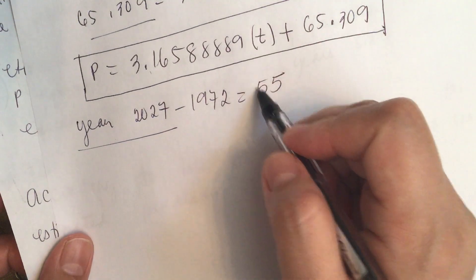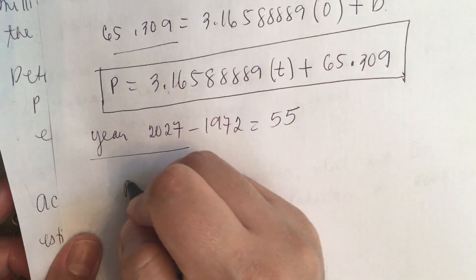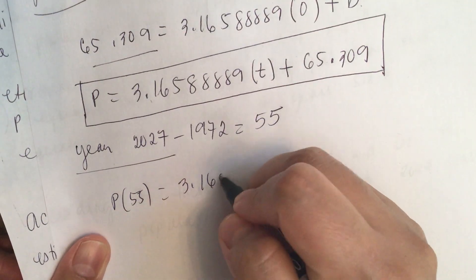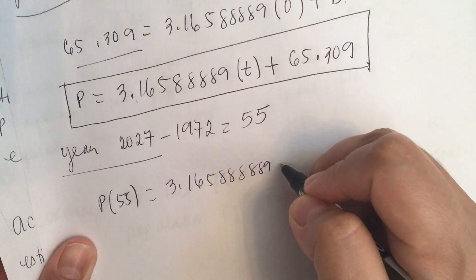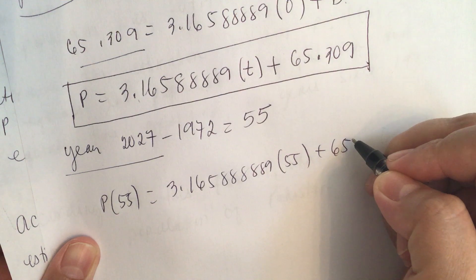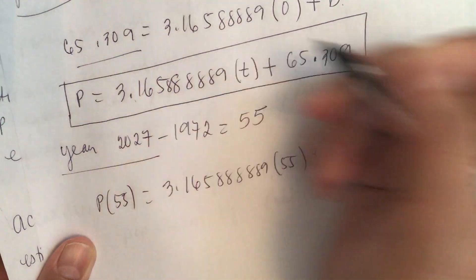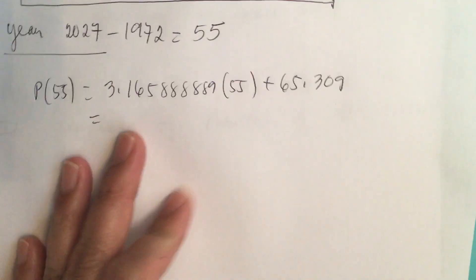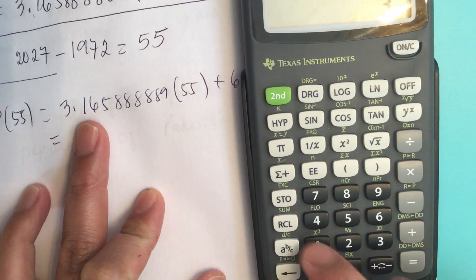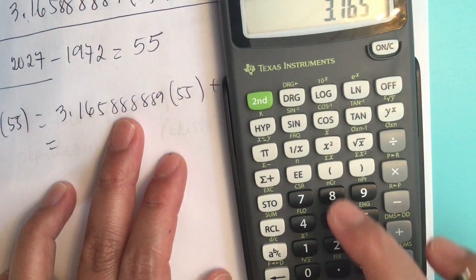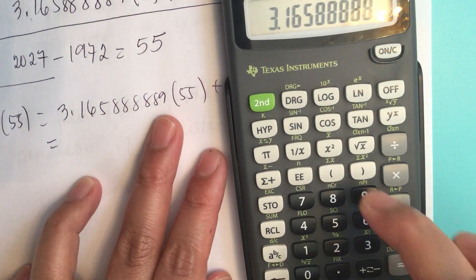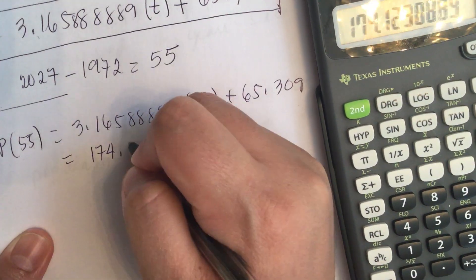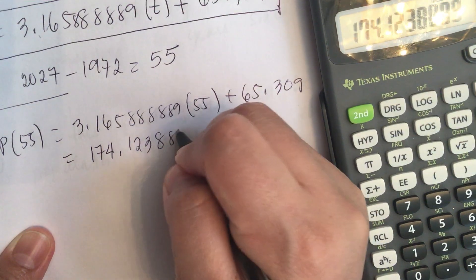We're going to plug in 55 into the function. P of 55 years is equal to 3.165888889 times 55 plus 65.309. We have 3.165888889 times 55 equals 174.12388889.